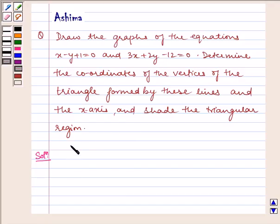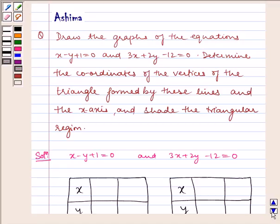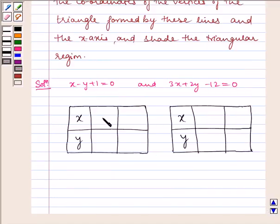Now given equations to us are x minus y plus 1 is equal to 0 and 3x plus 2y minus 12 is equal to 0. Now let us find the corresponding values for x and y to plot the graph. For x equals 0, y equals 1, and for x equals 4, y equals 5. And for this equation, for x equals 0, y equals 6, and for x equals 2, y equals 3.